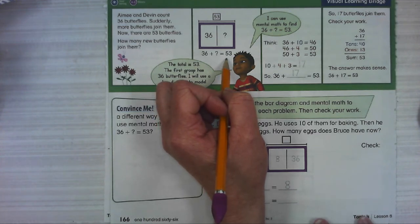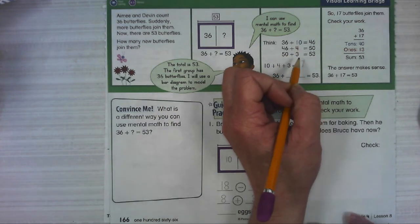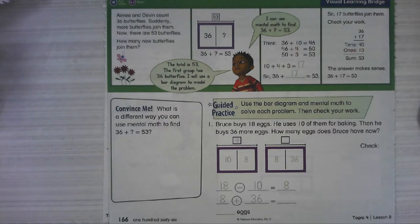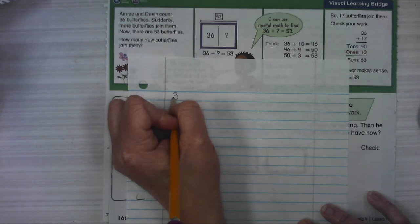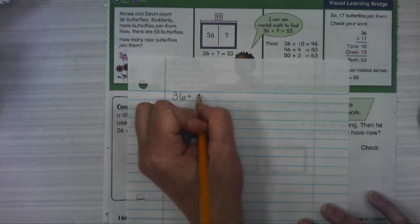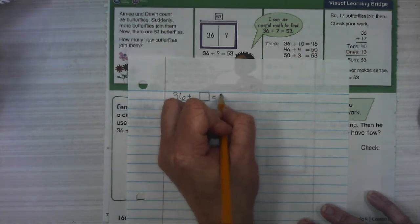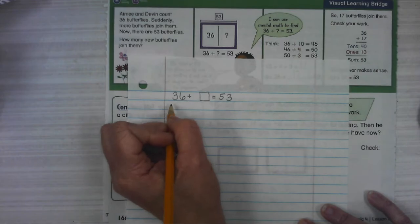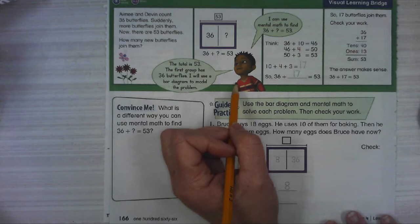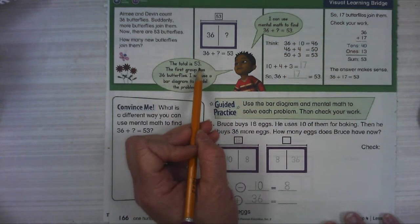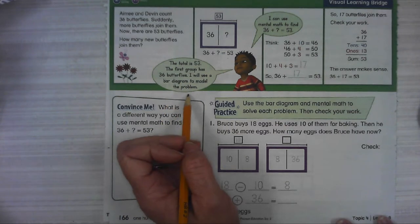There are lots of ways that we could solve this. We're going to solve it by counting up to make this number. And actually you've solved this a bunch of times on your other practice pages. You've done problems that look like this. Let's see what our friend is thinking. He says the total is 53. The first group has 36. So I'm going to use a bar diagram or a bar model to model the problem.